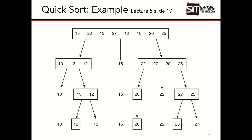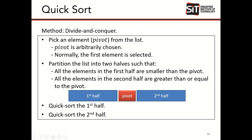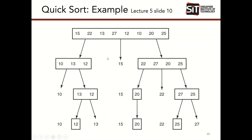Let's look at an example of quicksort. In this version we choose the pivot to be the first value. For this array, the pivot is chosen to be 15. Numbers smaller than 15 go to the left array, and numbers greater than 15 go to the right array. So 13, 12, and 10 go to the left, and 22, 27, 20, and 25 go to the right.